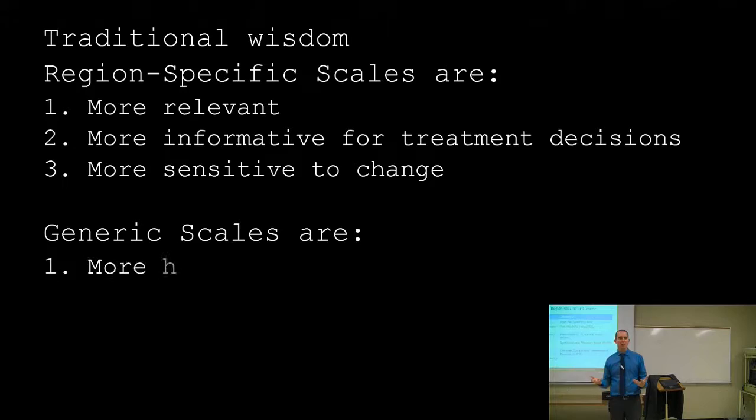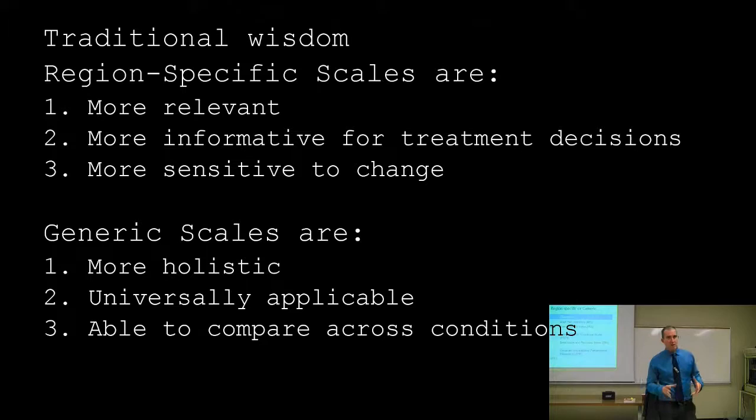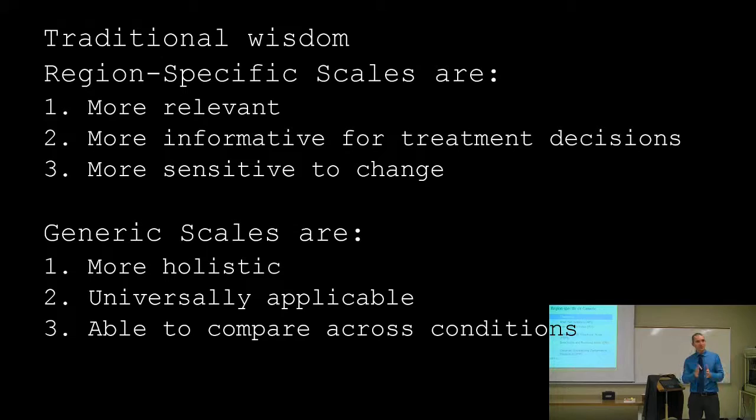It's generally thought that region-specific scales are more acceptable because they include items that are more relevant to people with a specific knee or back problem. On the other hand, generic scales allow you to compare across clinical conditions, which can be interesting. They also tend to be broader, offering more of a quality-of-life perspective overall.